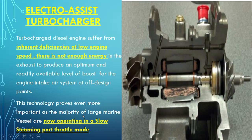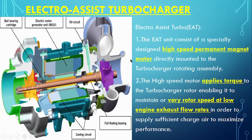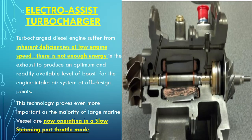Turbocharger diesel engines suffer from an inherent deficiency at low speed — there is not enough energy in the exhaust to produce optimum boost for the engine intake air system at off-design points. This technology proved even more important as the majority of large marine vessels began operating in slow-steaming, part-throttle mode. During the recession, companies instructed engines to run in slow-steaming mode, but auxiliary blowers are not designed for continuous operation and may burn out — to prevent that, the electro assist turbocharger idea came up.